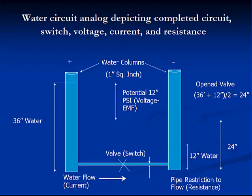First, note that the two unequal columns of water are connected, similar to a battery's plus and minus posts, yet separated by a water valve or an electrical switch. Before the valve is opened, or the electrical switch is closed completing the circuit, a difference of 12 inches of water head — or voltage potential, or electromotive force in electrical terms — exists.